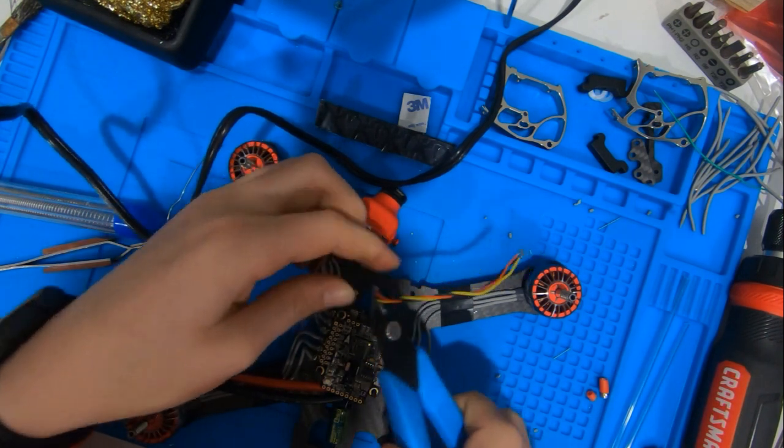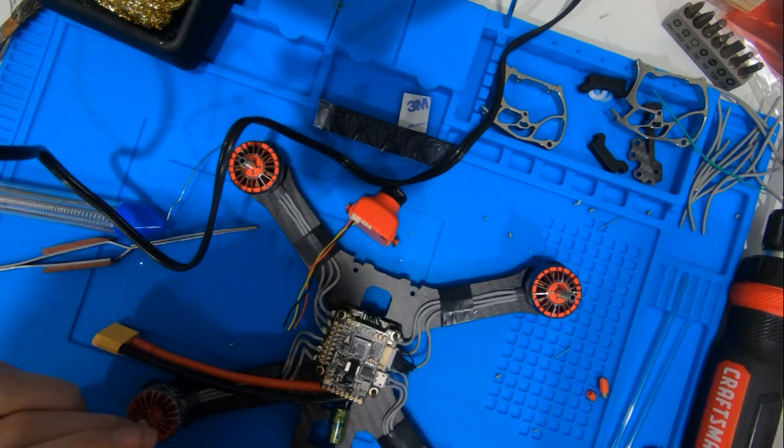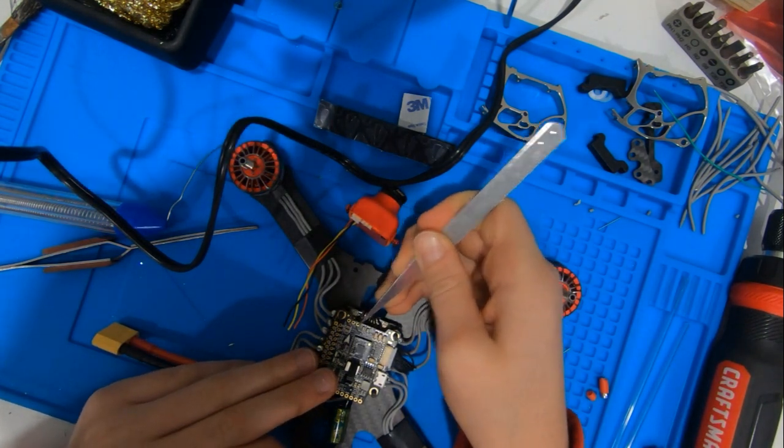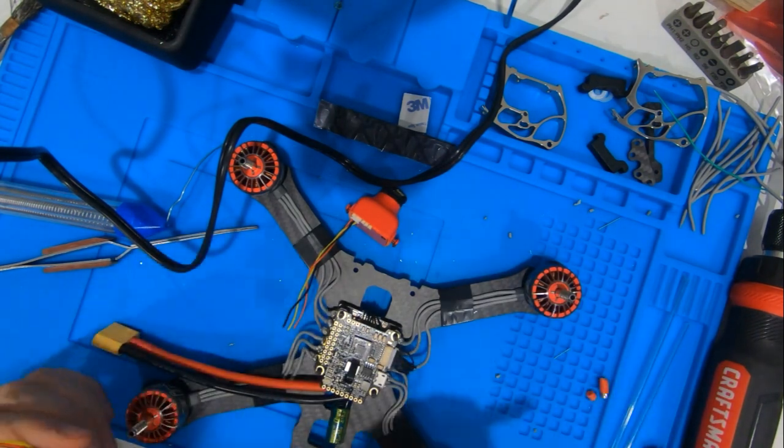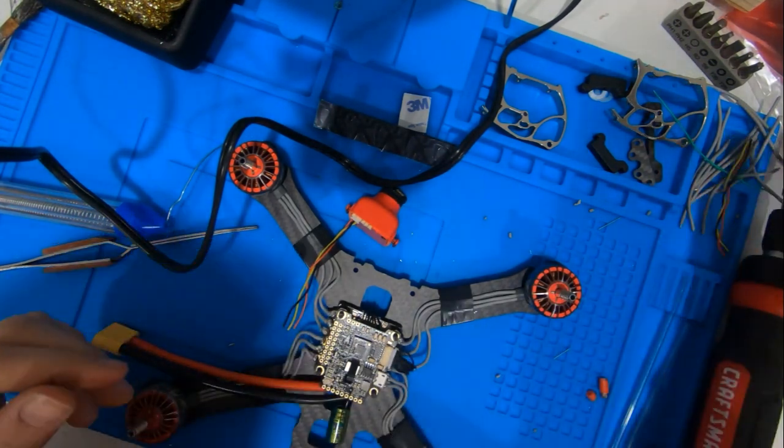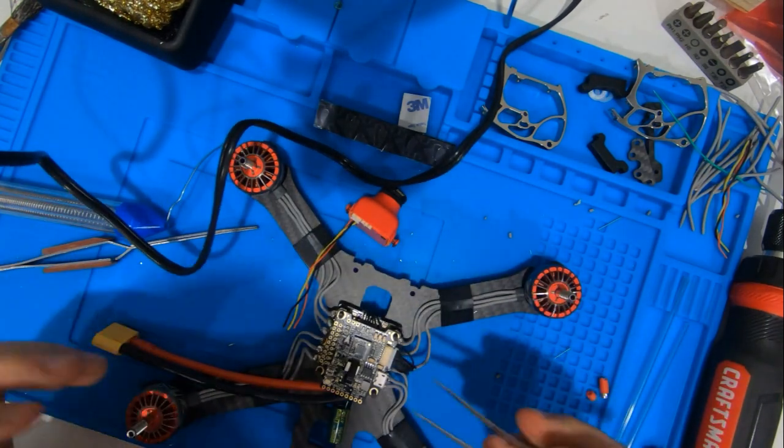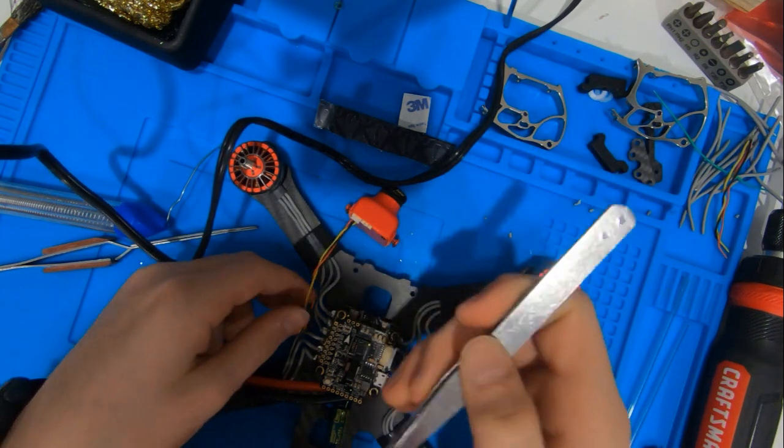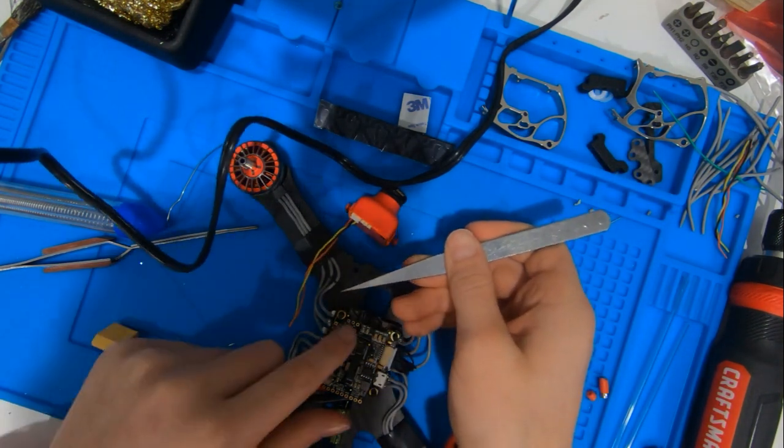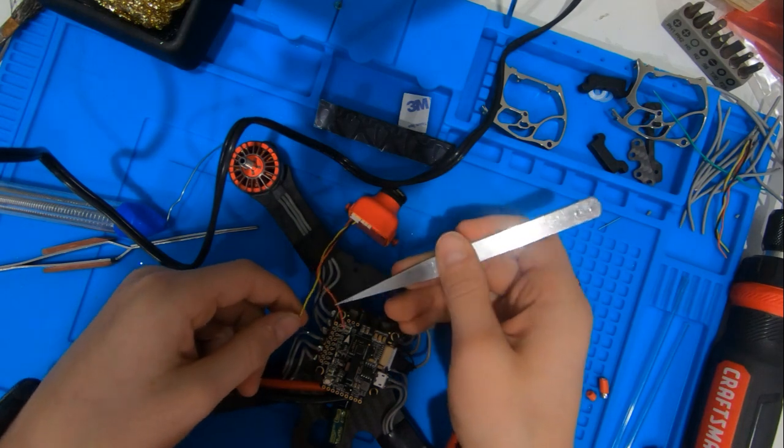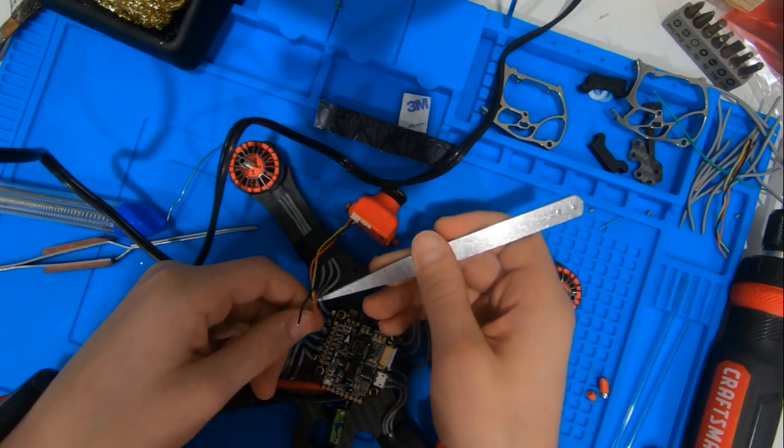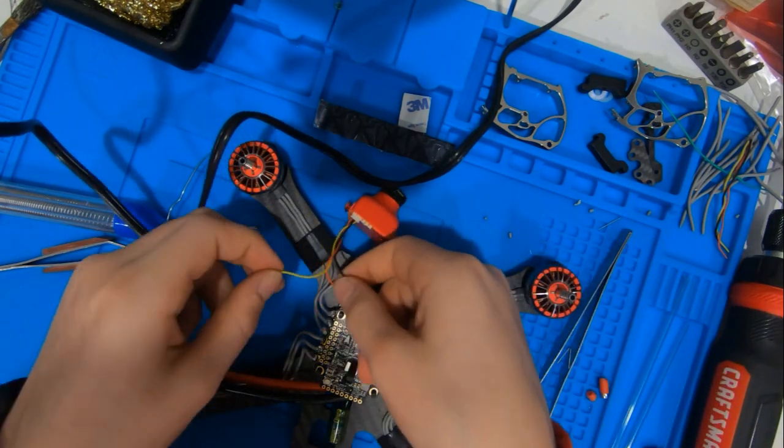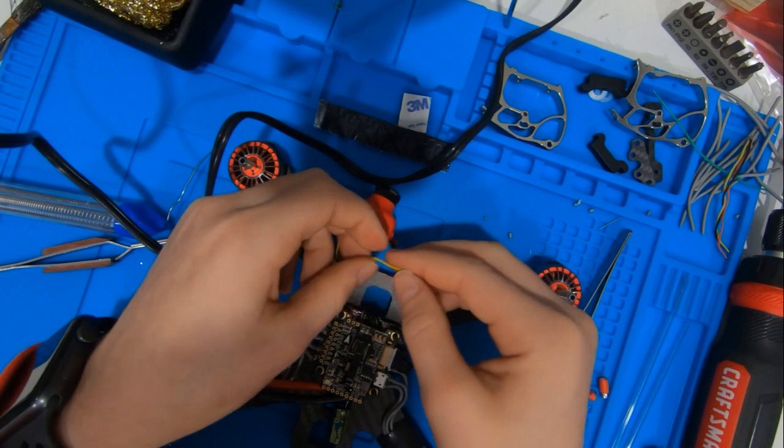Also, you can see here on the board, we have ground, 5 volts, and video in. So we're going to be using Betaflight OSD. It's going to give us some status inside of our goggles on what the drone is doing, especially because it's autonomous. We want to make sure that we have that update information. So the black wire is going to be ground, the red wire is going to go to 5 volt, and then this yellow wire is going to go to signal. So we're just stripping these wires and soldering them down.